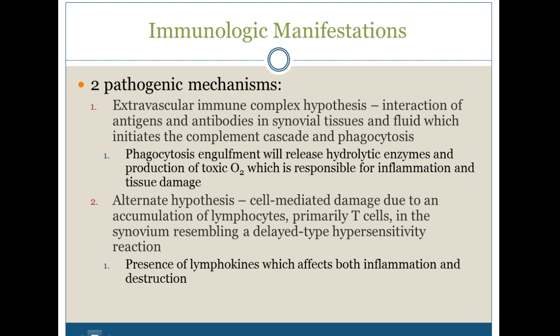There are two different mechanisms that could potentially cause this. The first is an extravascular immune complex hypothesis: there's an interaction of antigens and antibodies in the synovial tissues and fluid, which causes the complement cascade and phagocytosis. When phagocytosis happens, it releases hydrolytic enzymes and toxic oxygen, which can cause inflammation and tissue damage within those joints.